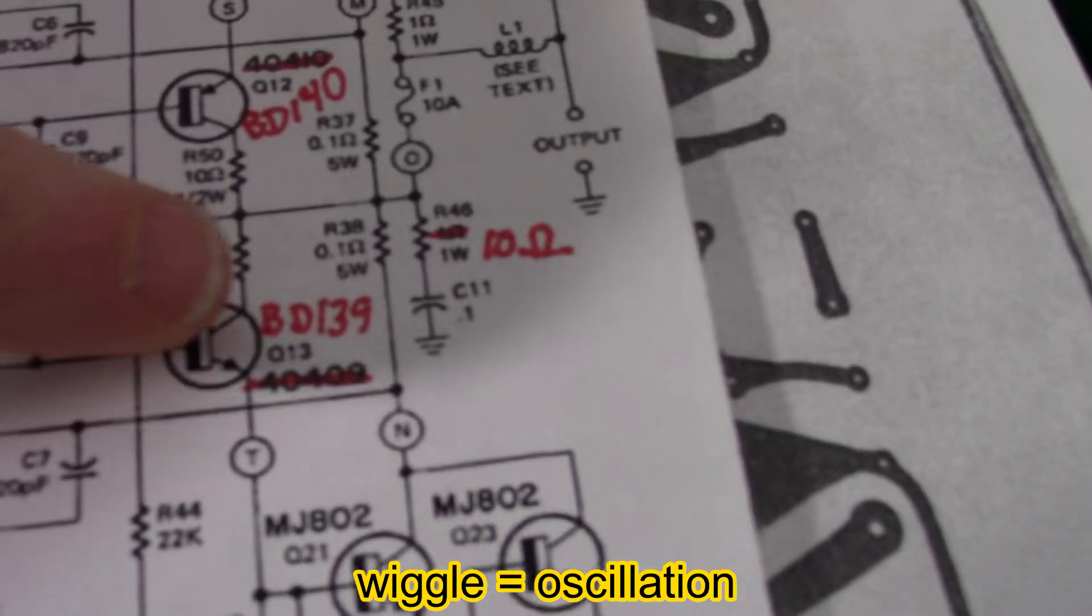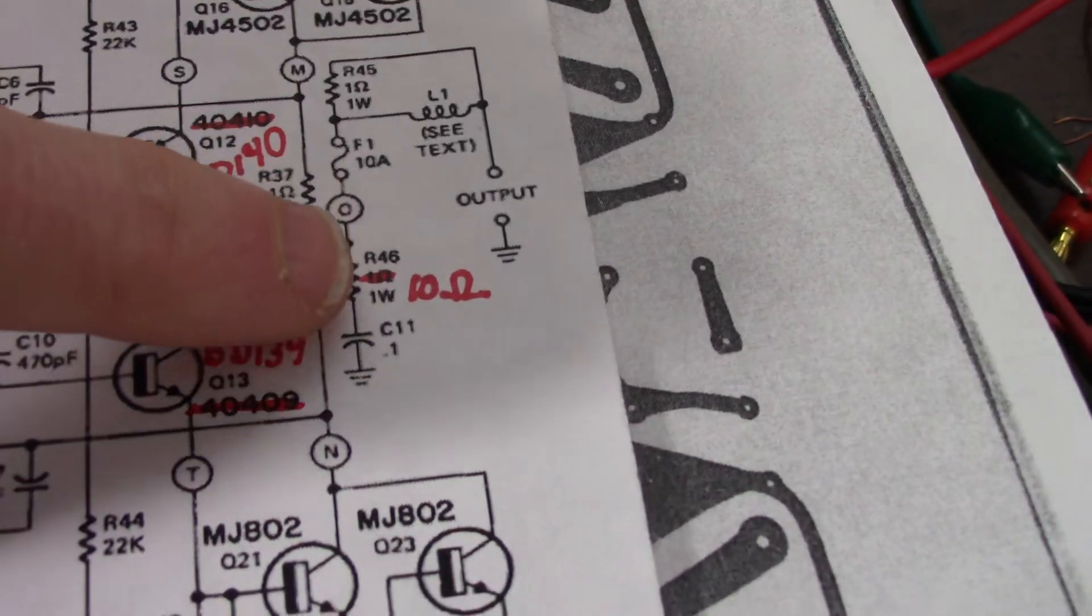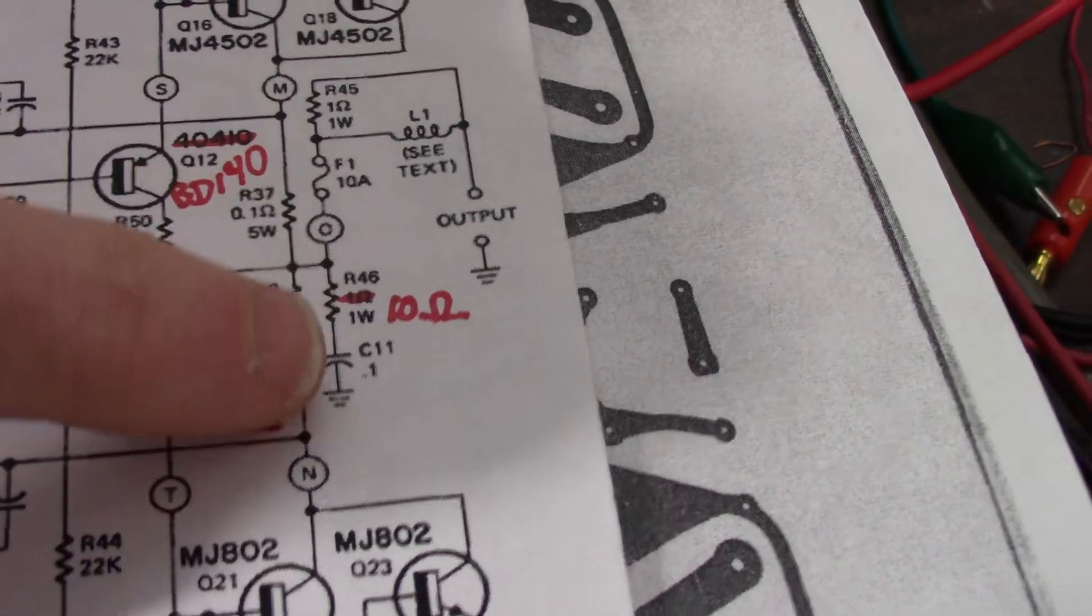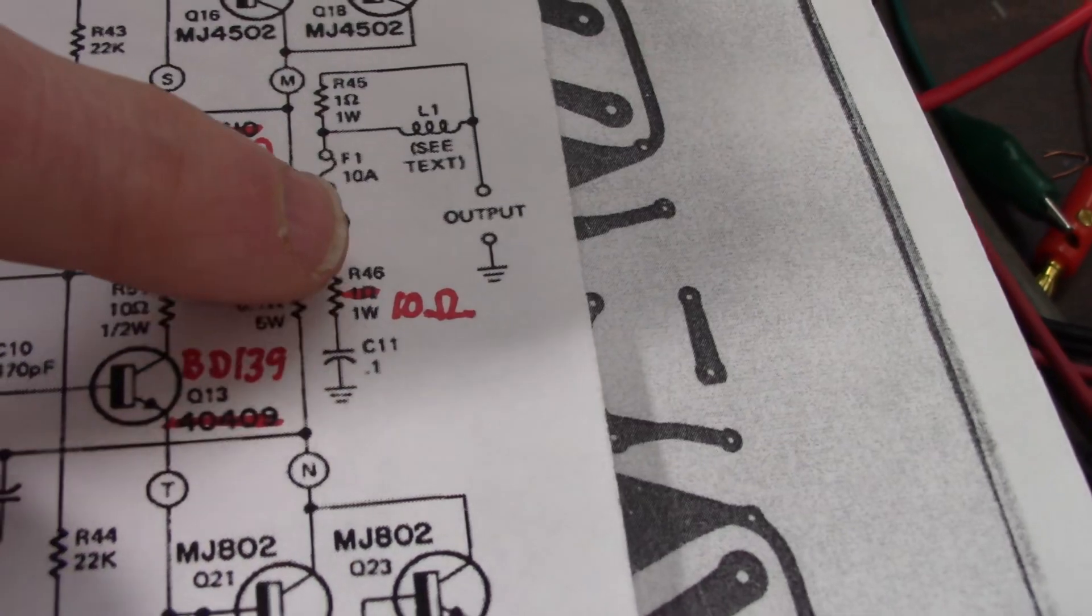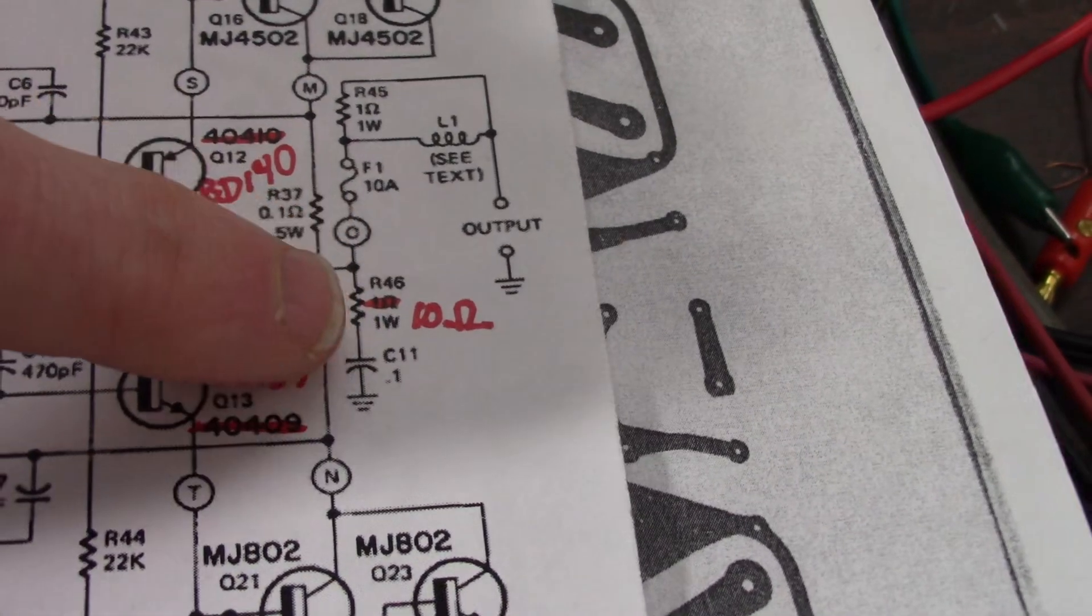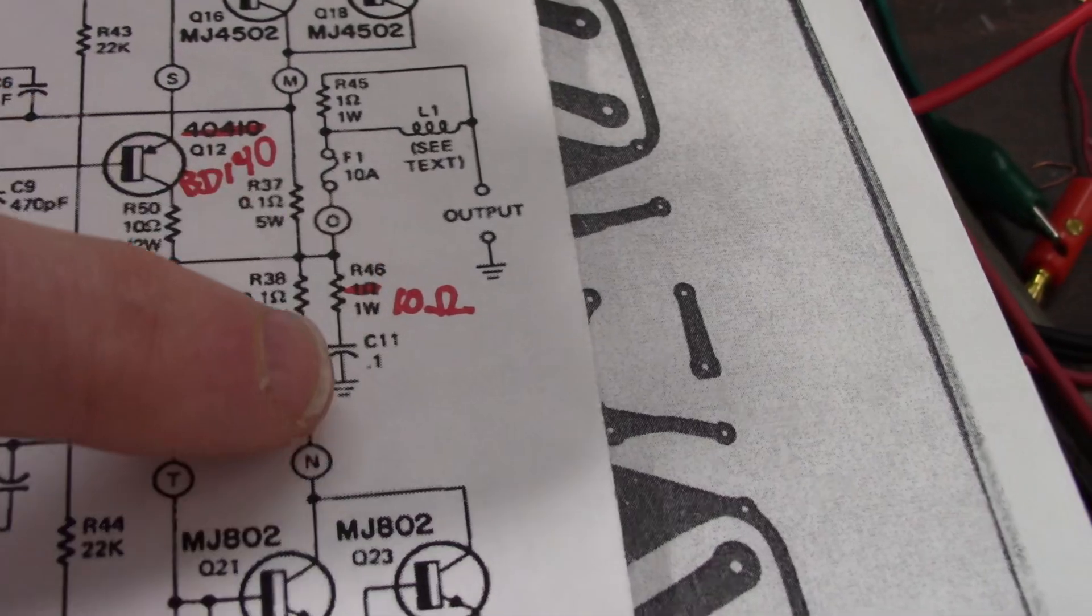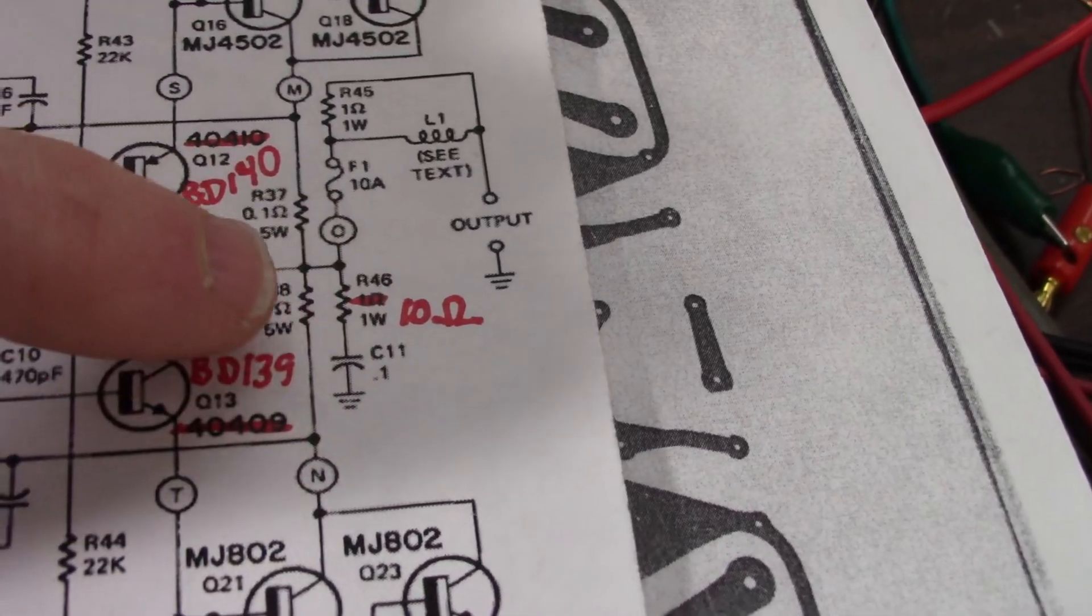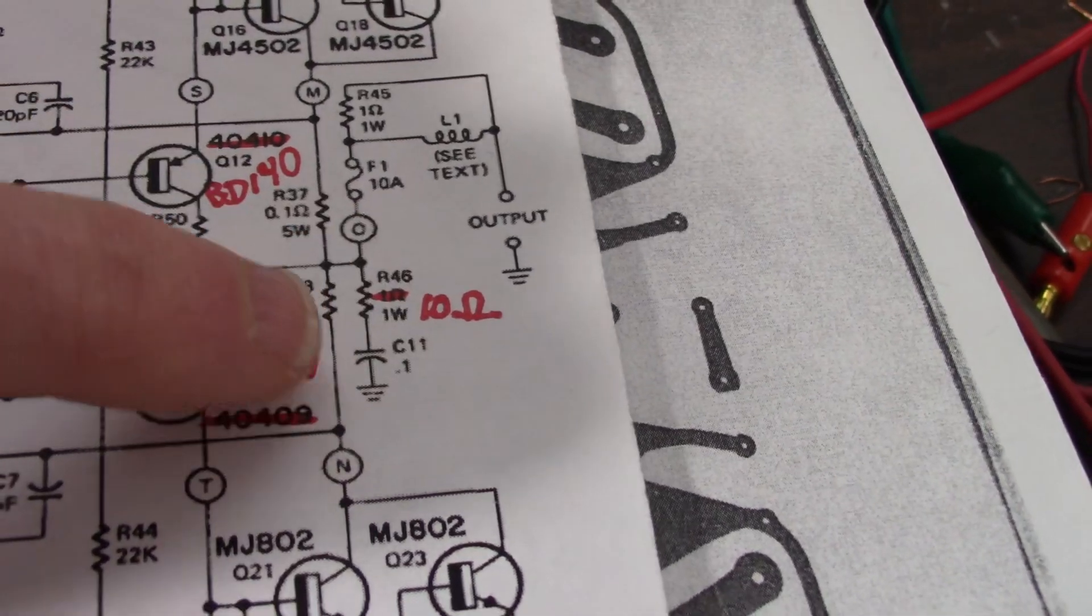So, what I did was, this Bougereau cell, Snubber, whatever you like to call it, Zobel. This is typically a 10 ohm resistor here. And I was wondering if one ohm with a capacitance might have been adding some instability. So, I made that a 10 ohm, and it cleared it away. No more.